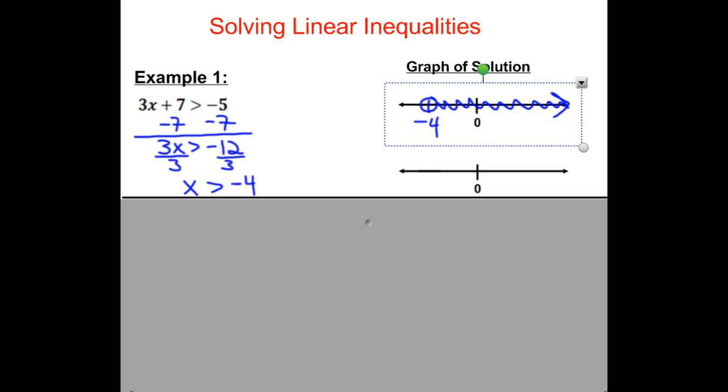saying that any number bigger than negative 4 will be a solution to our inequality. We could do it with an open parenthesis if we wanted, and we would have negative 4 and everything greater than negative 4 as our solution.